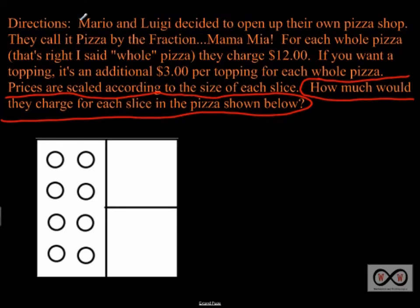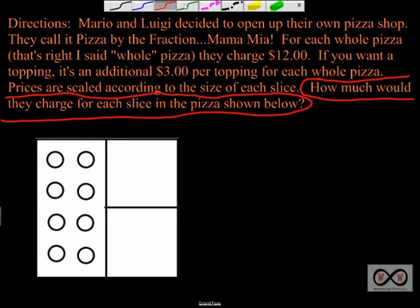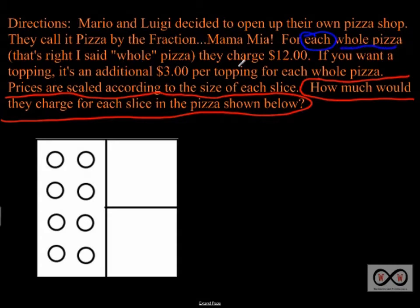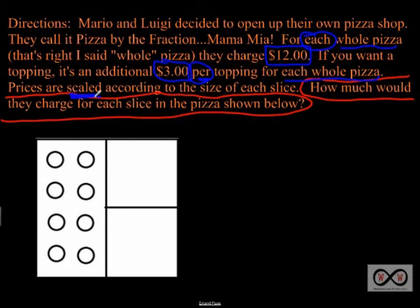Let's go to the top and look for math clues sentence by sentence. 'Mario and Luigi decided to open their own pizza shop' — that's story information. 'They call it Pizza by the Fraction' — again story information. For each whole pizza they charge twelve dollars — there's our first price: twelve dollars. Each topping is an additional three dollars per topping — so three dollars per topping for a whole pizza. Prices are scaled — note that word 'scaled' — according to the size of each slice.